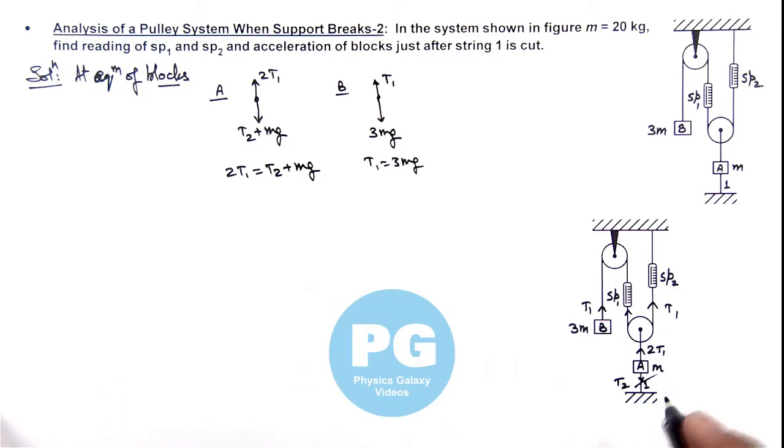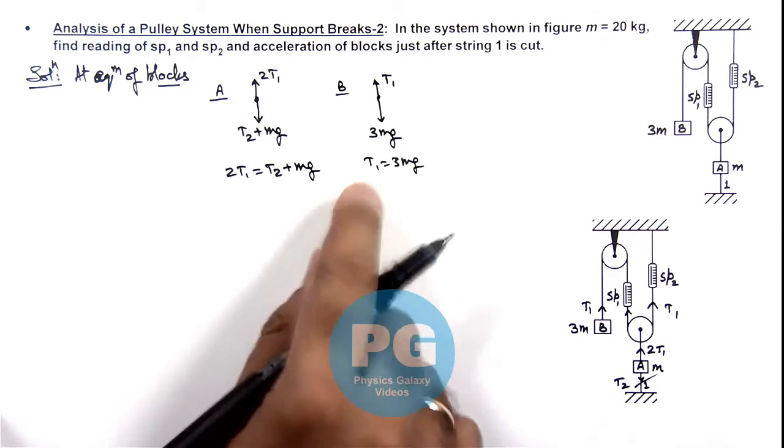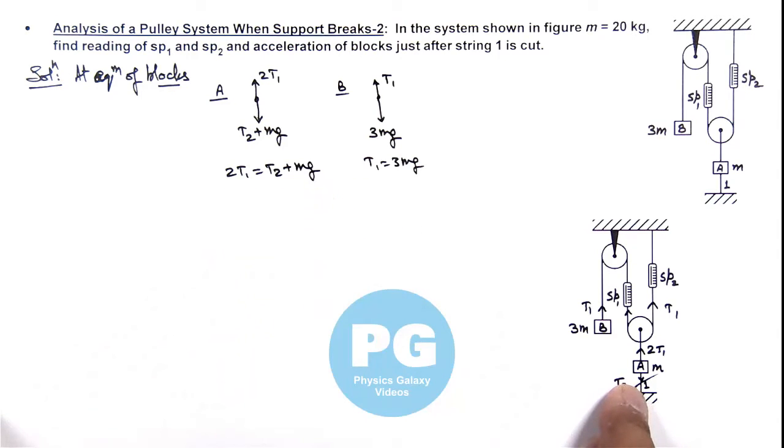But when string 1 snaps, then obviously the value of tension T2 suddenly goes down to zero. So this mass will have a tendency to move up. And here we can analyze the situation that this mass if starts going up.